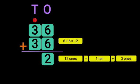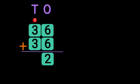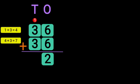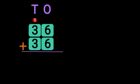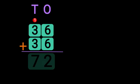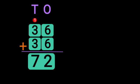Now add the digits in the 10's place: 1 plus 3 gives you 4, and 4 plus 3 gives you 7. So 1 plus 3 plus 3 in the 10's place gives you 7. The sum of the two two-digit numbers 36 plus 36 gives you the answer 72.